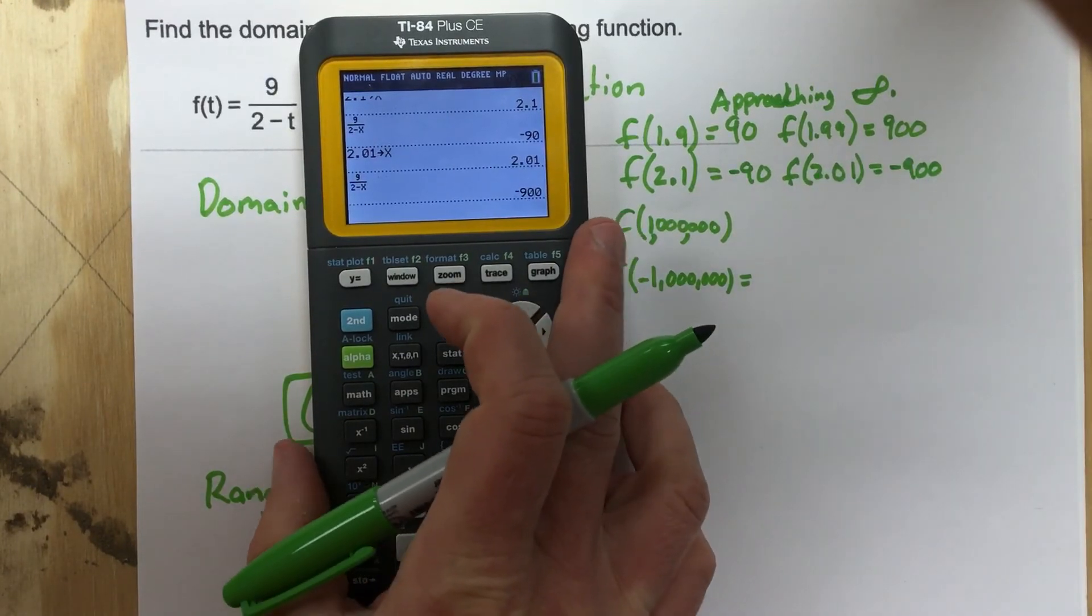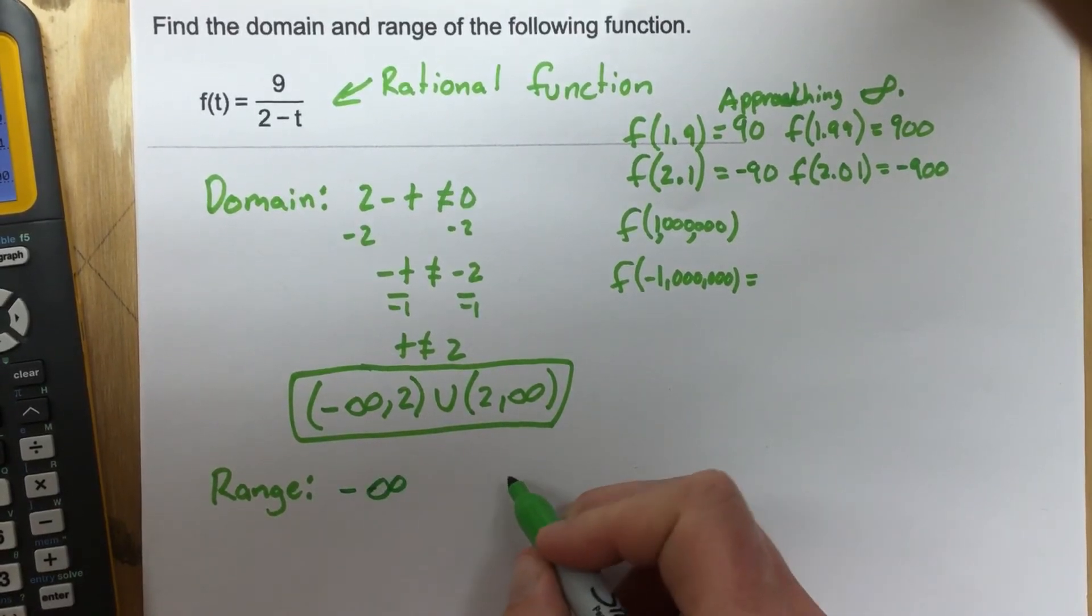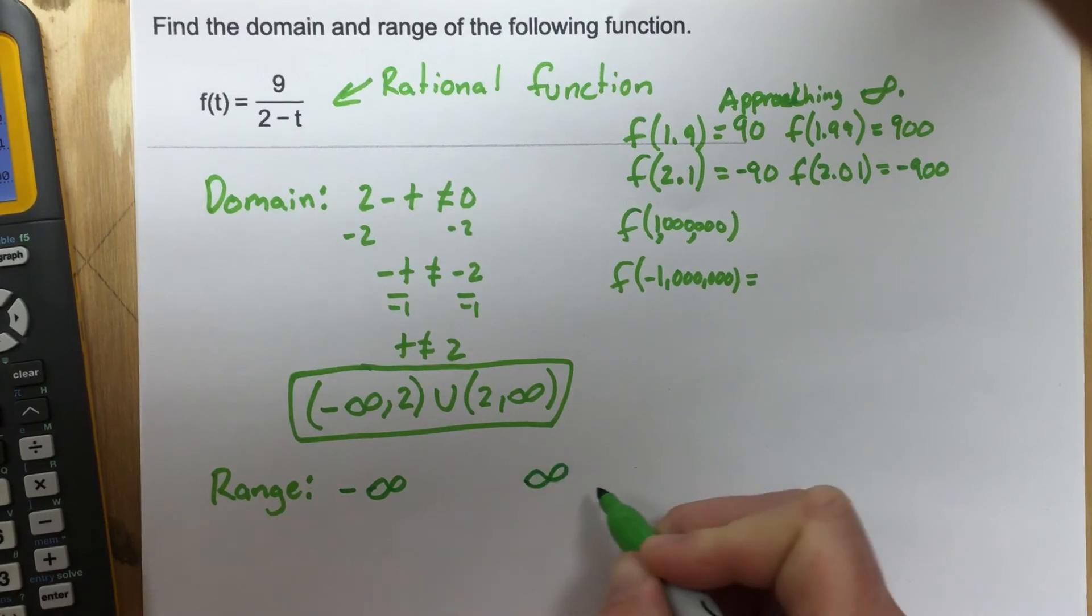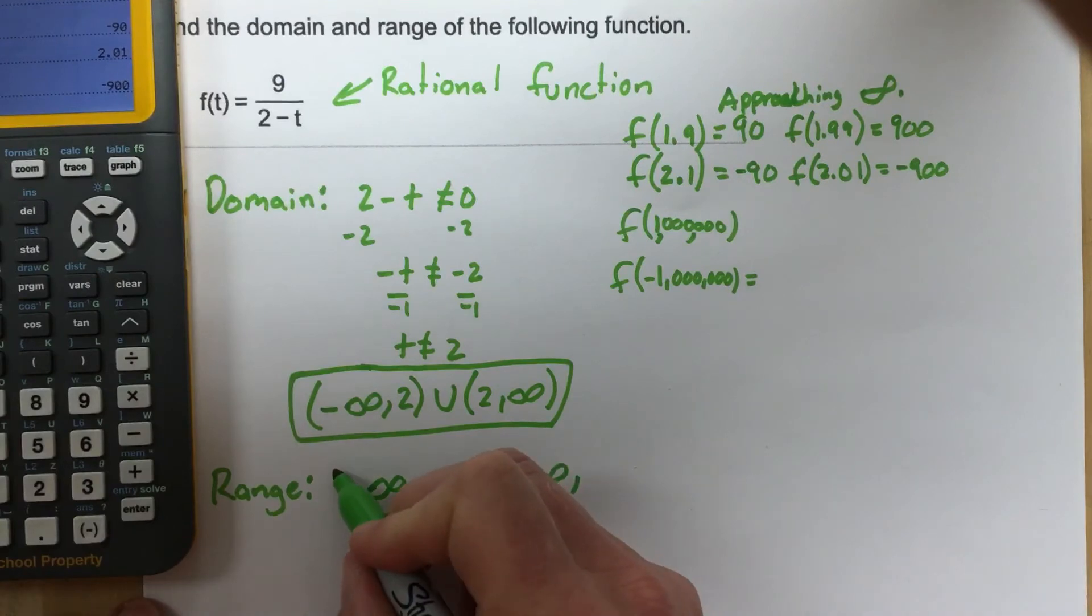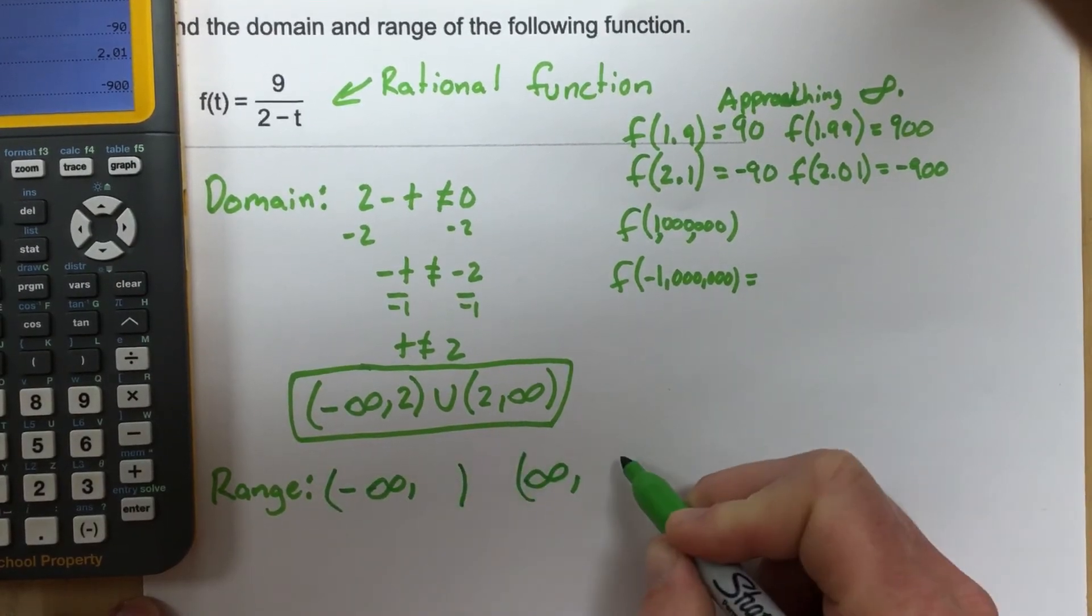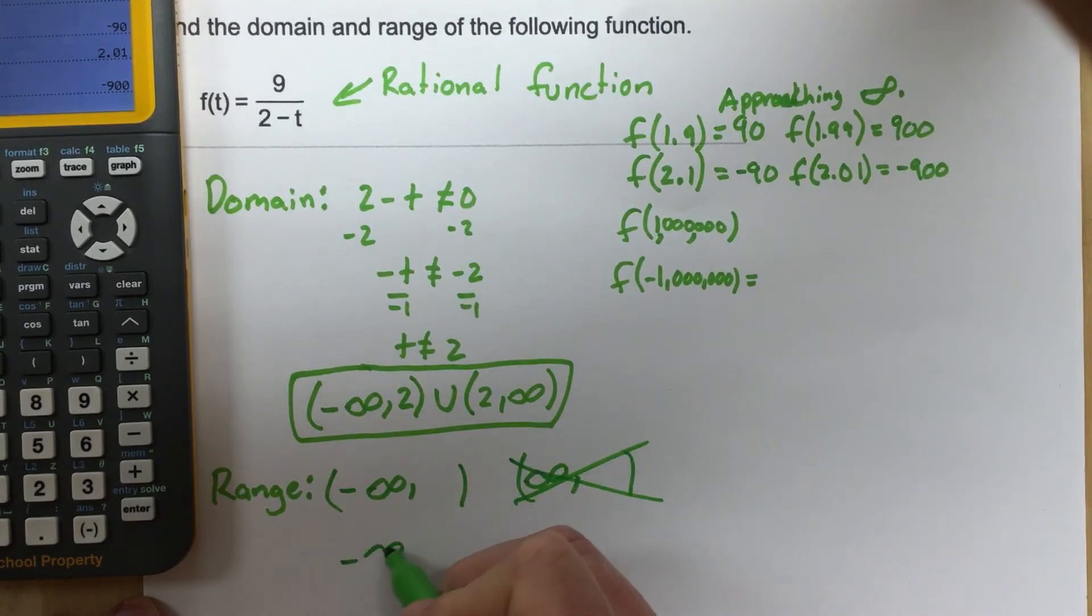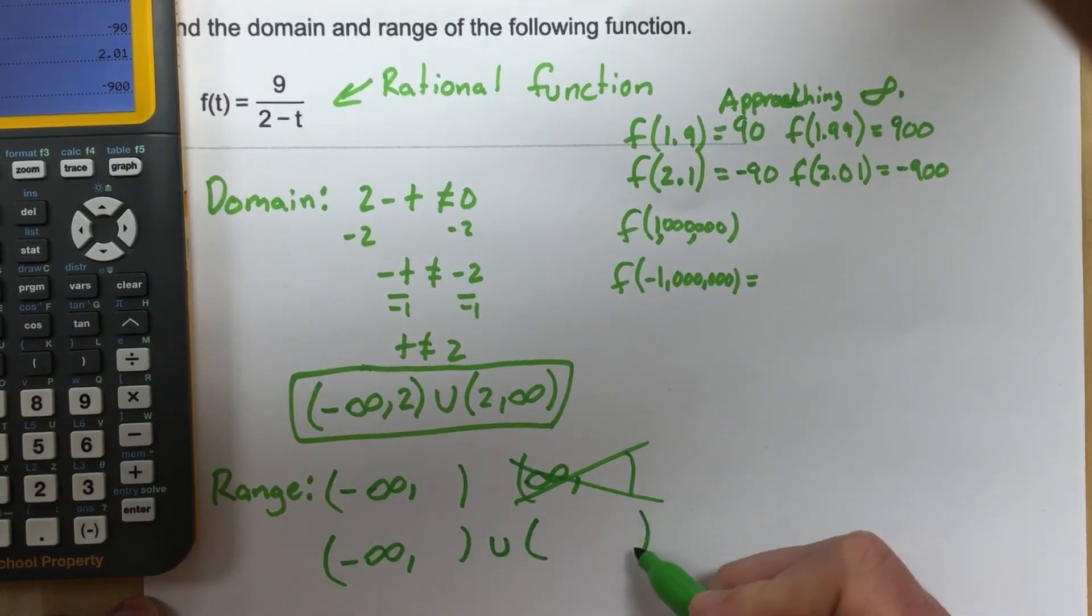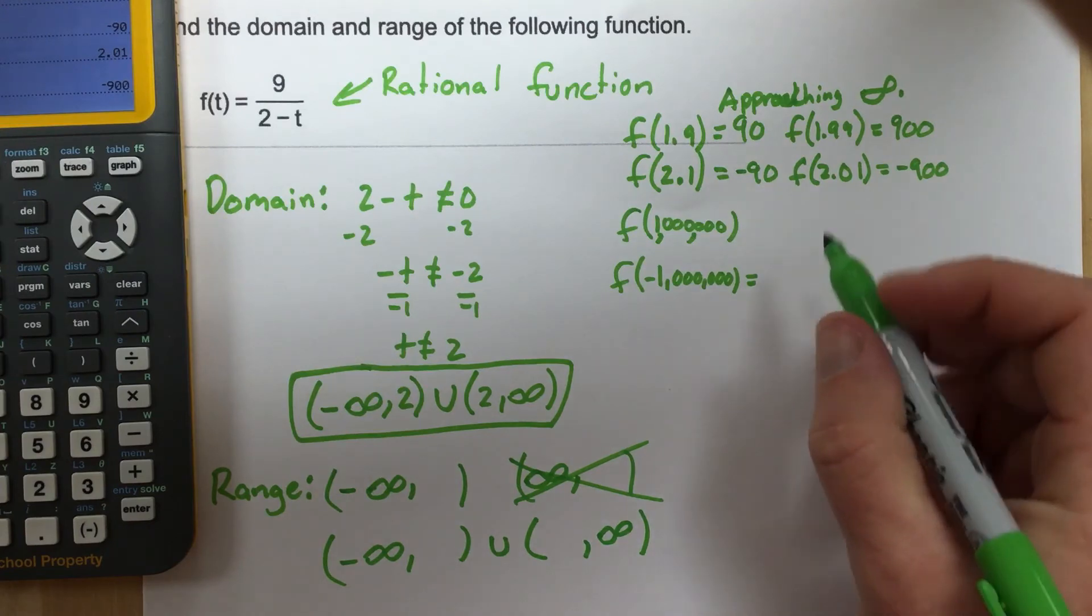So we know our range so far is going to have negative infinity and it's also going to have infinity. Now, it could go from negative infinity to infinity. Right now, I'm setting this up like it's not going to. This should be negative infinity to something, and then we're going to go union something to infinity. I'm setting up like it's not going to go from negative infinity to infinity. But if I find out that it is, then I'll just write one interval notation negative infinity to infinity. But right now, I'm assuming it's not going to.